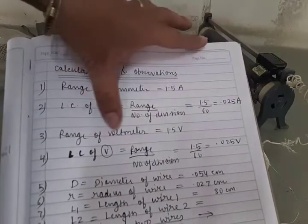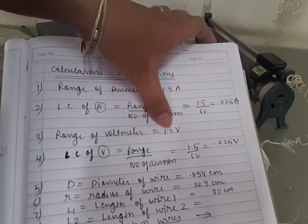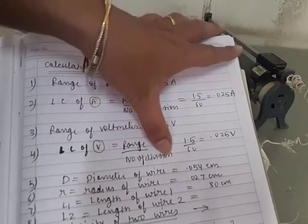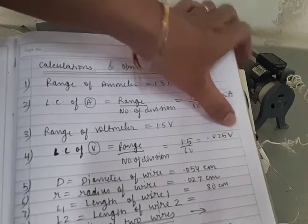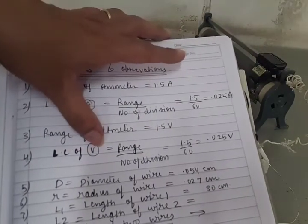In the same manner, range of voltmeter is also 1.5, divisions are 60. So 1.5 upon 60 means 0.025 volt is the least count of voltmeter.